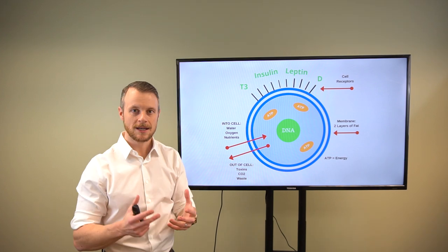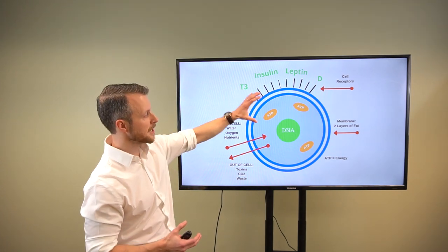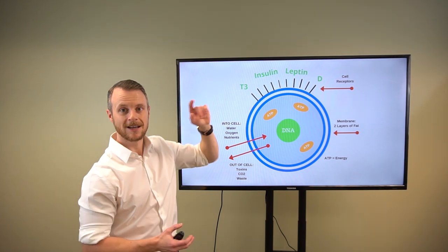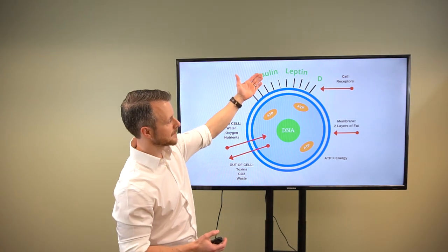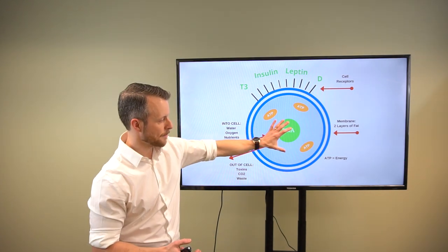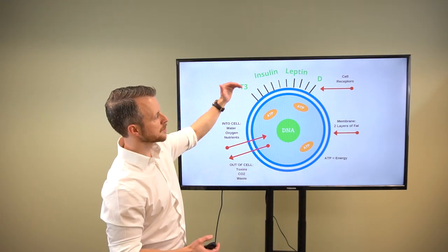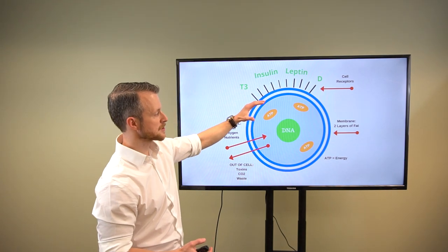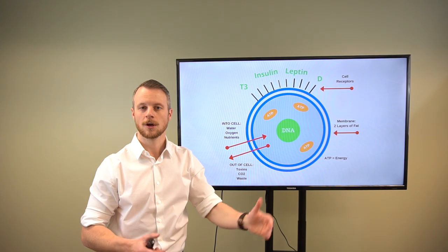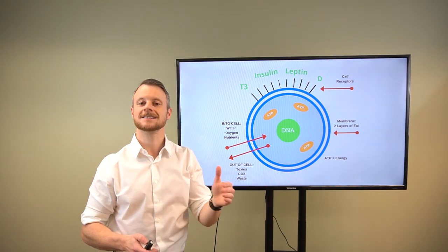Likewise, for diabetes and insulin to be able to tell the cell to open up and let some glucose in to take it out of the bloodstream, insulin must bind to the receptor site to get its message into the cell. So good things going in, bad things coming out, hormones and vitamins binding to these receptor sites. This is so important and it happens normally in a healthy cell, but it's compromised in a sick cell.